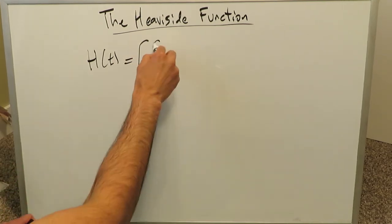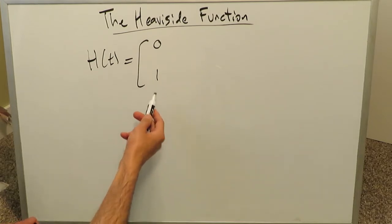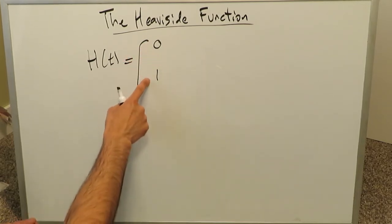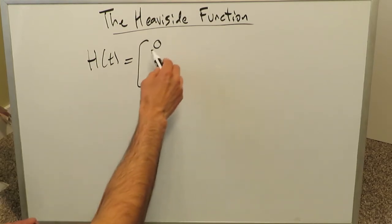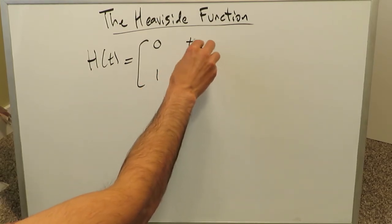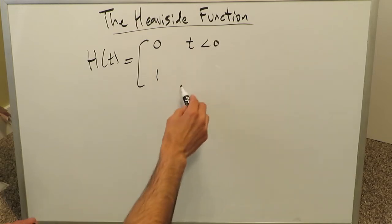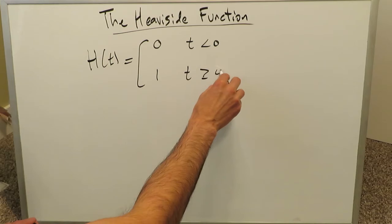It has two states. One is zero and one is one. One state has a value of zero, the other state has a value of one based on the condition of this function. The value of zero exists for those values of t, which are time, being less than zero, and the value of one for those conditions where time is greater than or equal to zero.